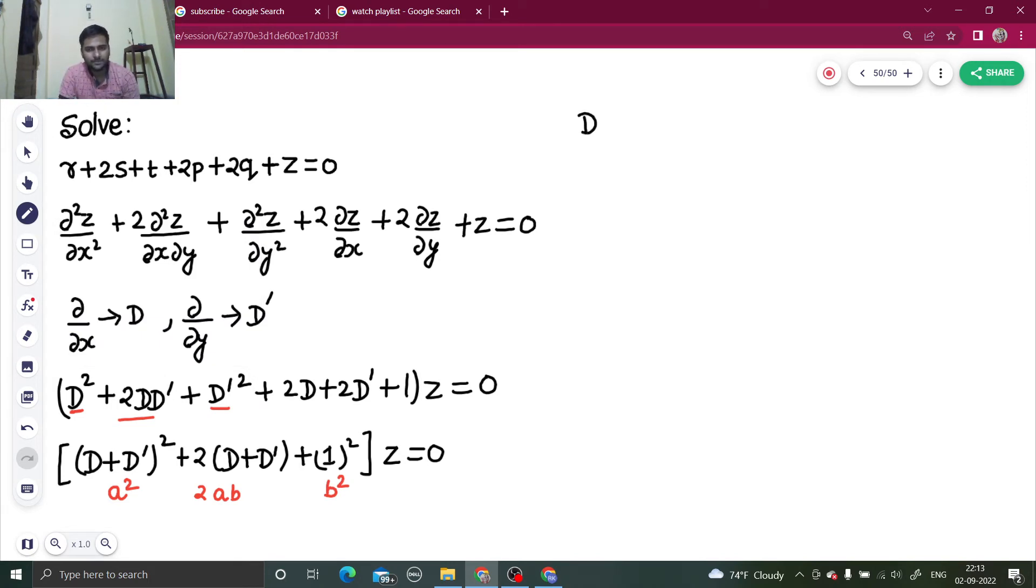Again you can write this as D plus D dash, this is a, plus b is one, whole square. Now whole square can also be written as two distinct terms.